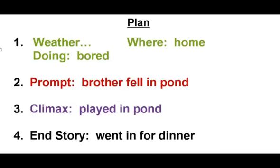Let's fill in your plan. First is weather, then where — where are these boys in the story? In the story, they're at their house and then they're going to go to the pond. The main character, the first boy, is starting out at home. Write home next to where now. What is the boy doing at the beginning of the story? He's bored and complaining about it. Write bored next to doing now. The first event: his brother fell in the pond — fill in your two now. Next, the climax: the boys played in the pond. Fill in your three now.